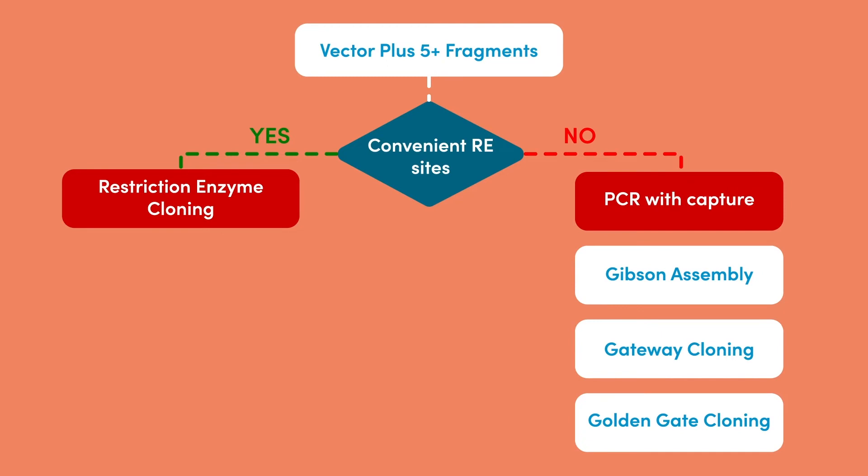In each of these systems, you build your subunits first. In essence, you are parallel processing. You then assemble your component pieces into a final product in one reaction. Let's take a minute to review the differences between these systems. For more in-depth explanations of these systems, please see other videos in our library.